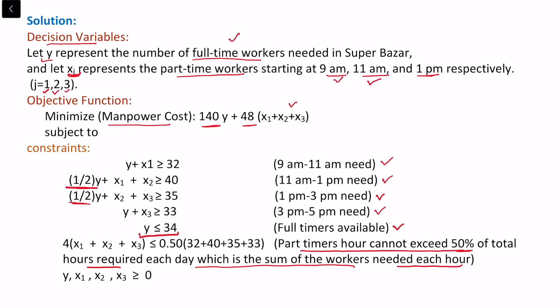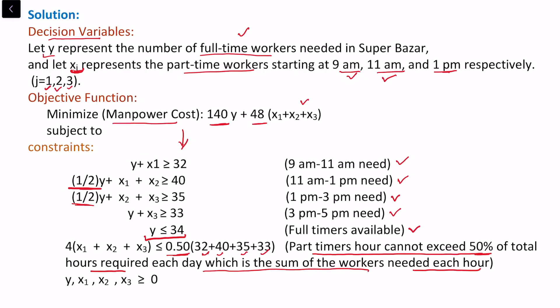The part-time constraint states that 4(x1 + x2 + x3) cannot exceed 50% of the total daily worker-hours required. All decision variables are non-negative. This example illustrates that many scheduling problems — machine scheduling, manpower scheduling, bus schedules, hospital duties — can be formulated as linear programming problems, with the scheduling conditions expressed as constraints.